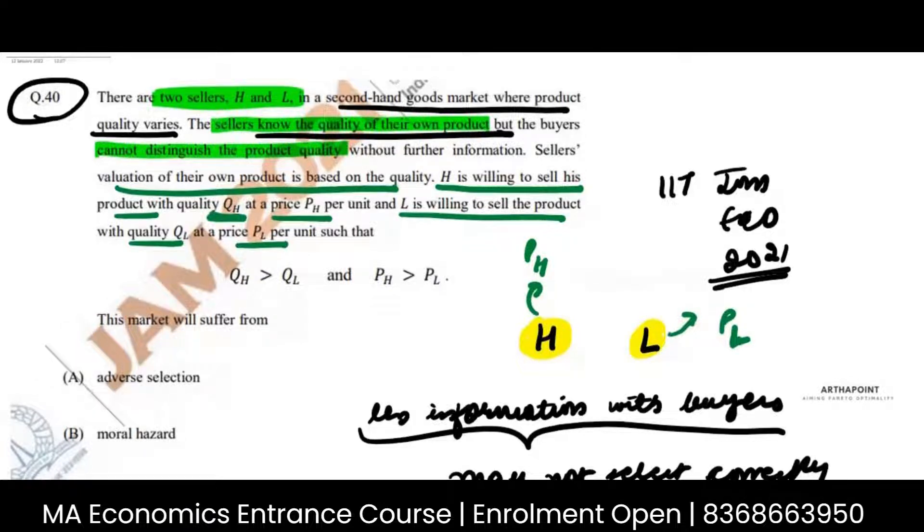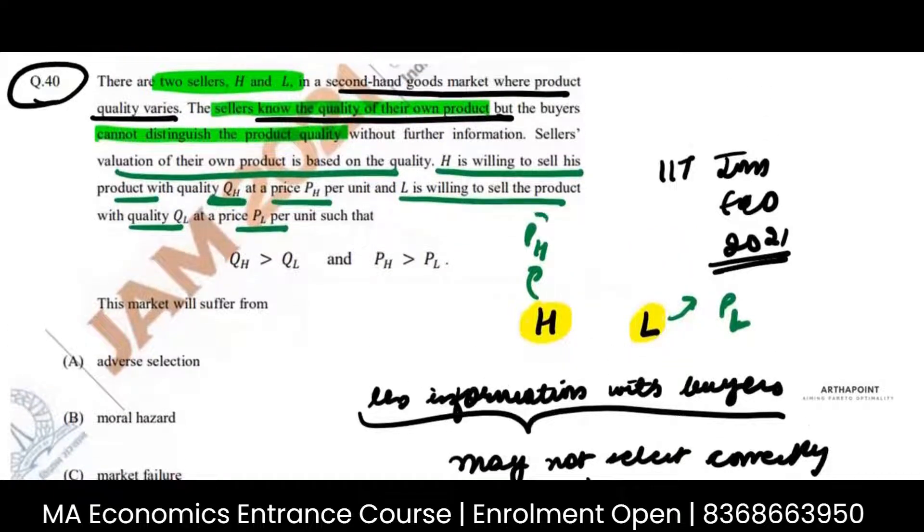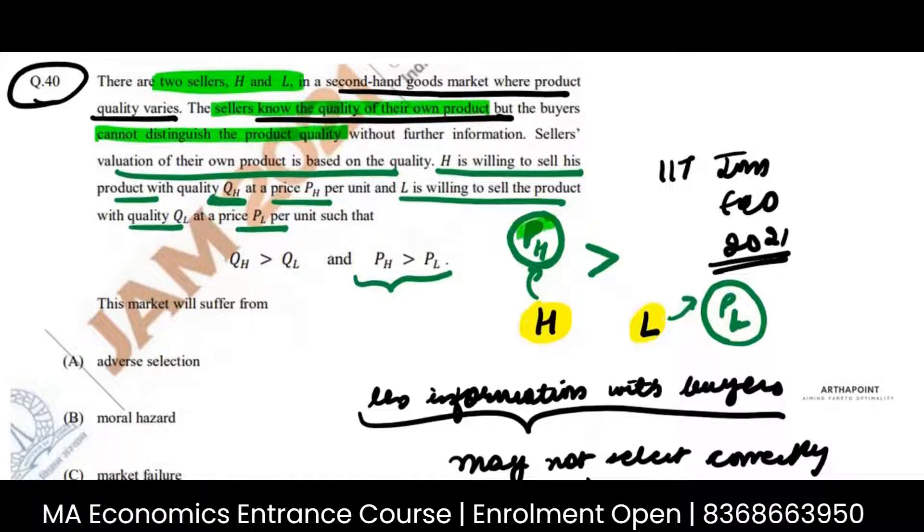The market will suffer from... Now please understand this thing. Although we understand that because this is a high quality, the price of this product is greater than the price of the low quality product. He is willing to sell his product at pH, and he is willing to sell his product at PL. Still, one important thing that is happening in this case is that this is the seller's own valuation.